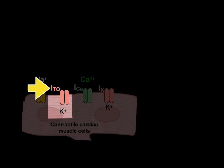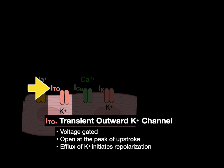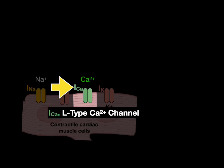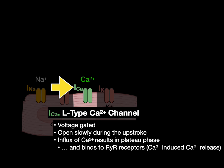Next is the transient outward current through the transient outward potassium channel — this is voltage-gated. It opens at the peak of the upstroke, allowing an efflux of potassium that initiates repolarization, and once these gates open they close almost immediately. The calcium current through the L-type calcium channel is also voltage-gated. It opens slowly during the upstroke, allowing an influx of calcium that results in the plateau phase during phase two. That influx of calcium binds to the ryanodine receptors, causing calcium-induced calcium release. The L-type calcium channels close as the membrane repolarizes.